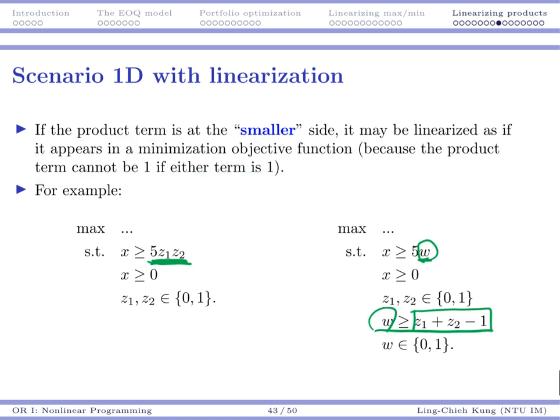So lastly, I need to take a look at this sentence again. The product term z1 z2 cannot be 1 if either term is 1. Actually, this should be 0.